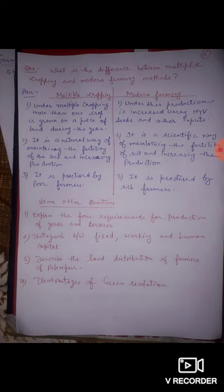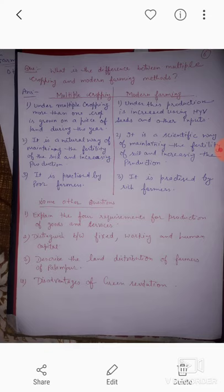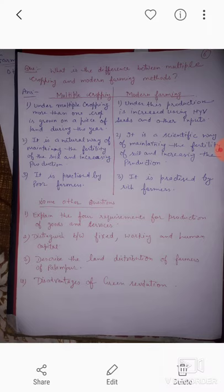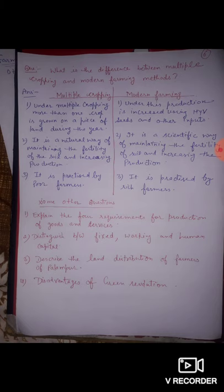Now some other questions. The first is: explain the four requirements for production of goods and services. We can explain the four factors of production. First is land, second is labor, third is physical capital — which is of two types: working capital and fixed capital — and last one is human capital.